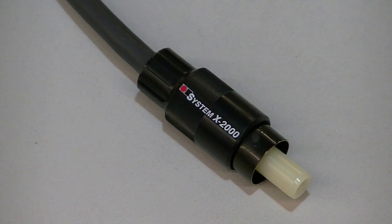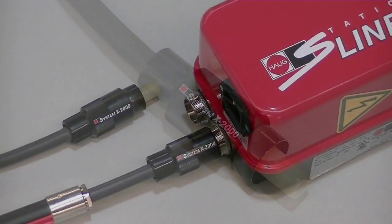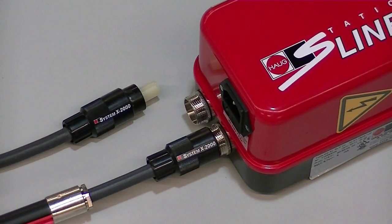Welcome to another video showcasing the Haug product line. Today we will be looking at the proper assembly of the X2000 plug or connector. This is the standard plug used to connect an ionization bar to any Haug power supply.